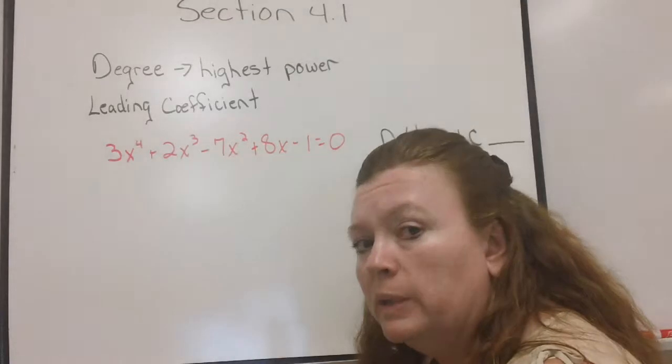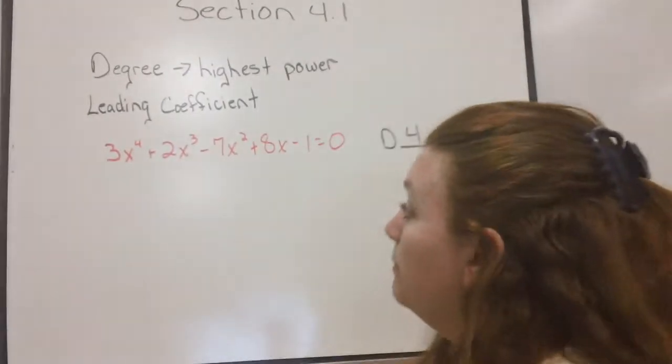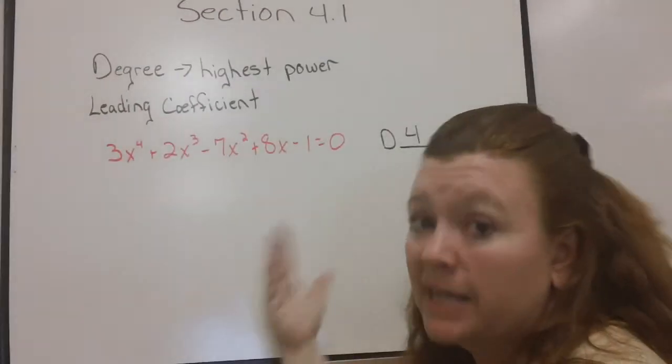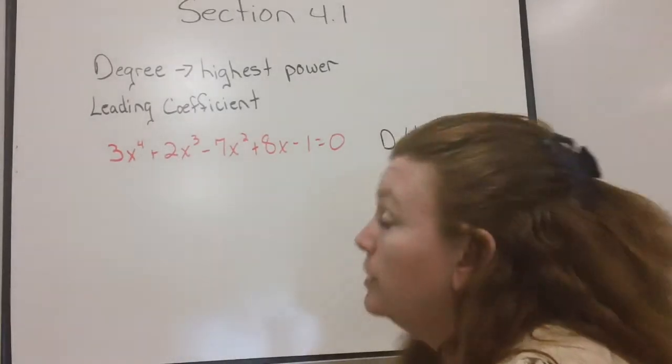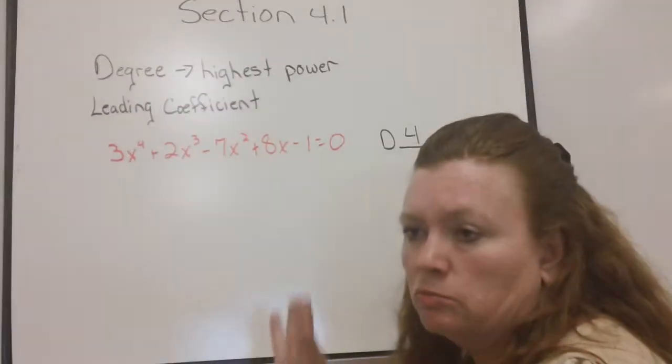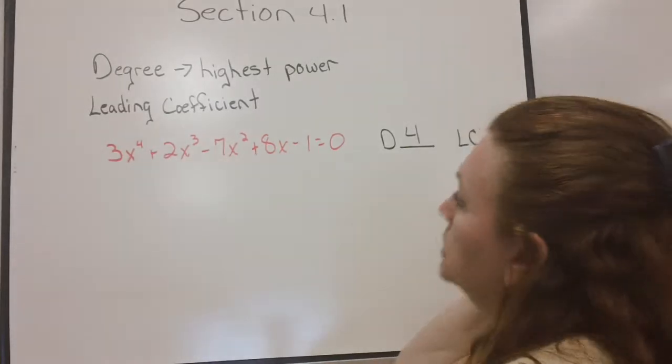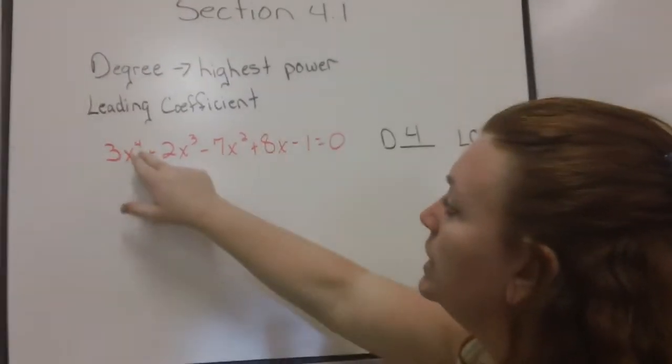And we're talking about what we call polynomials in one variable. That means that I don't have a y and an x. I just have an x that I'm dealing with. And I don't have negative powers, which we're not going to worry about right now. So, the degree is 4.